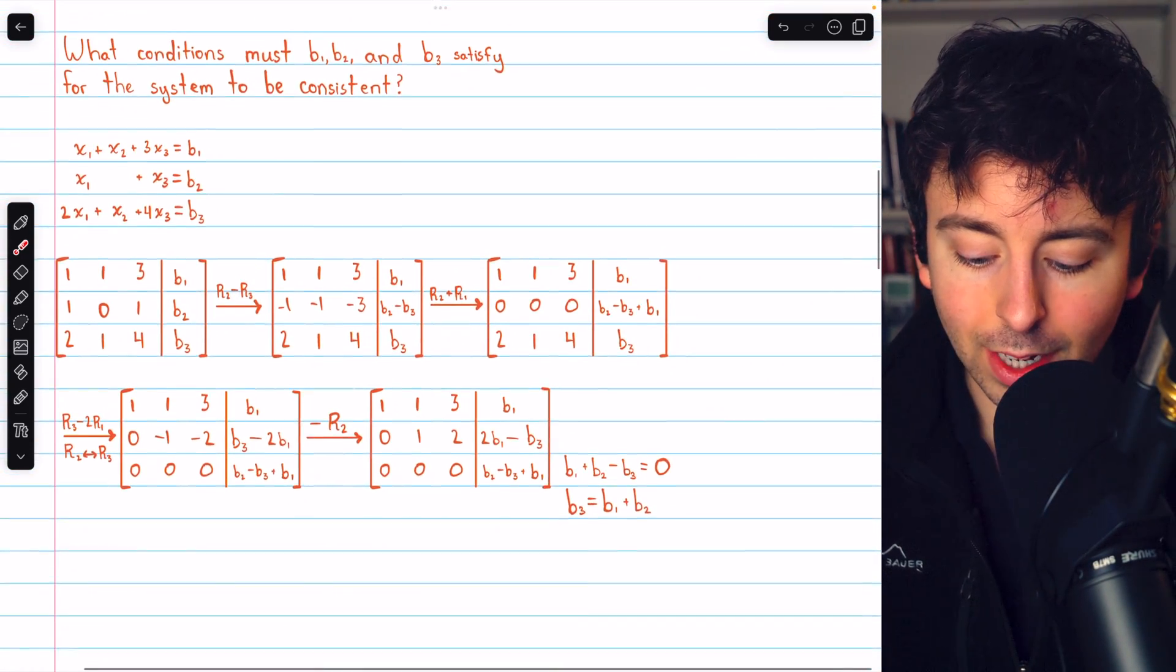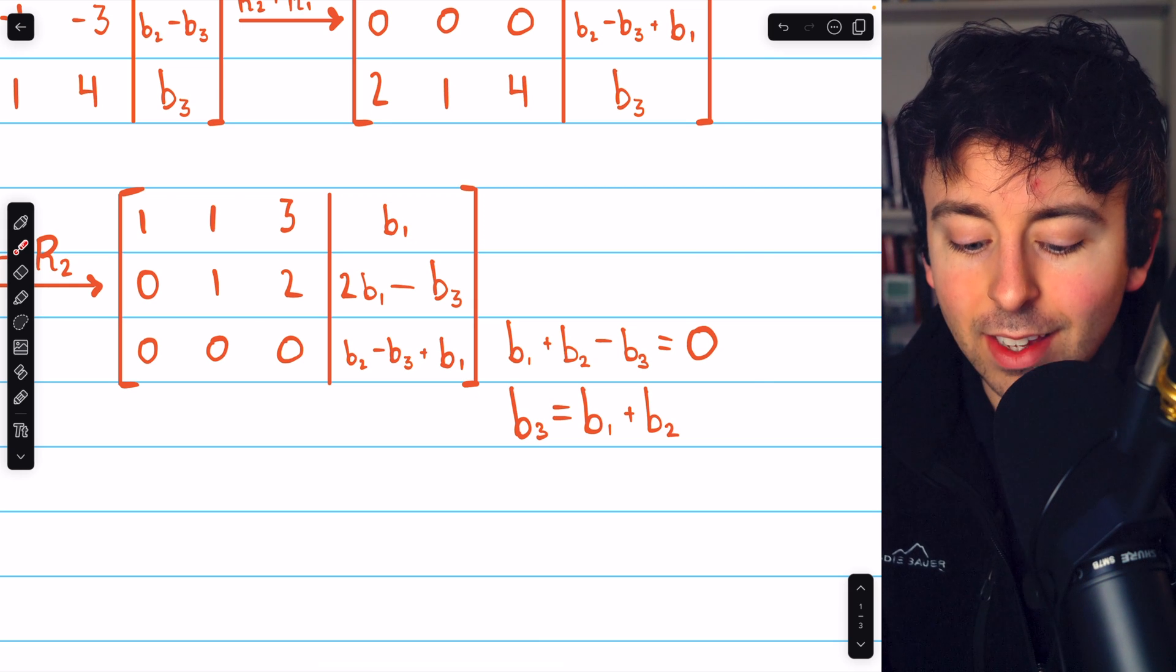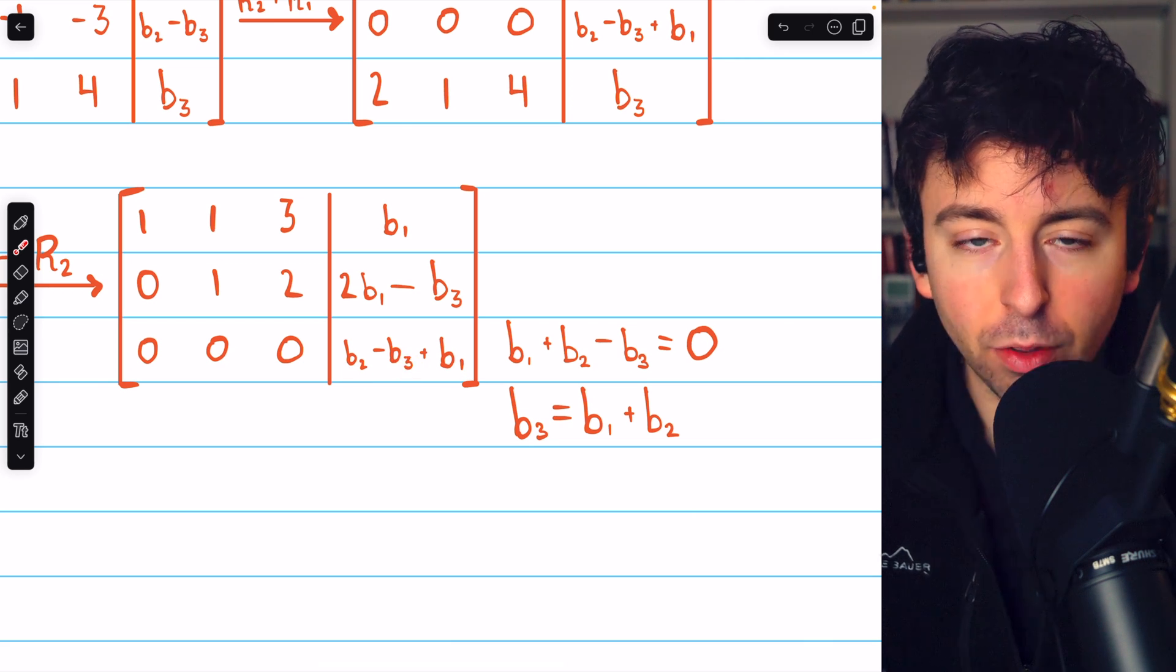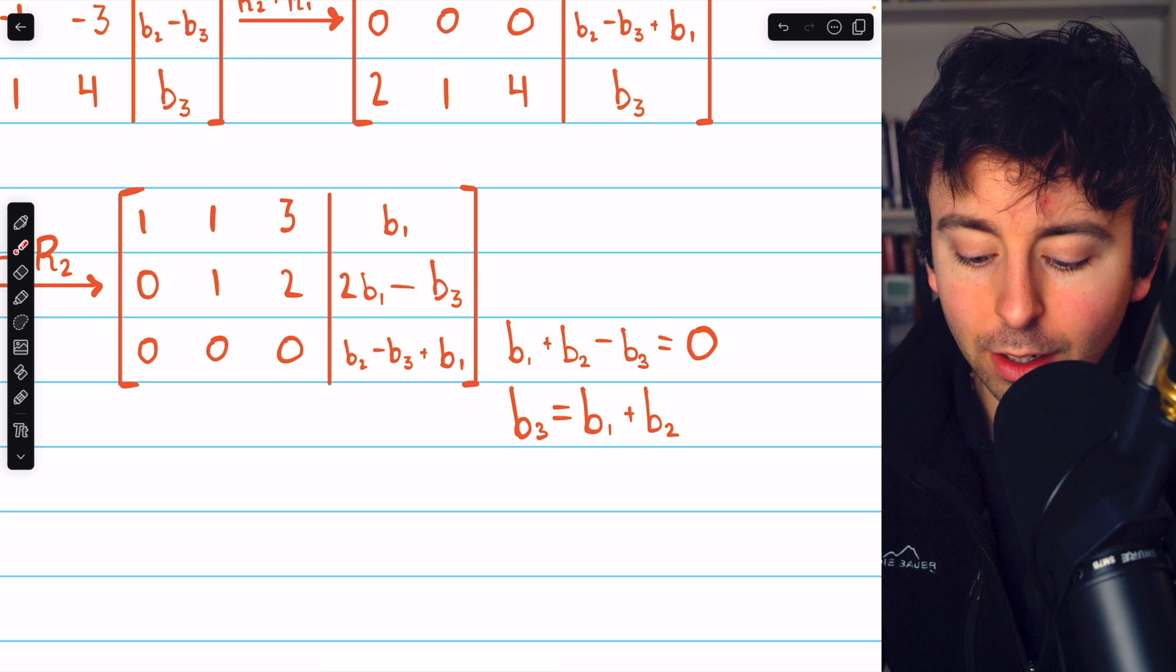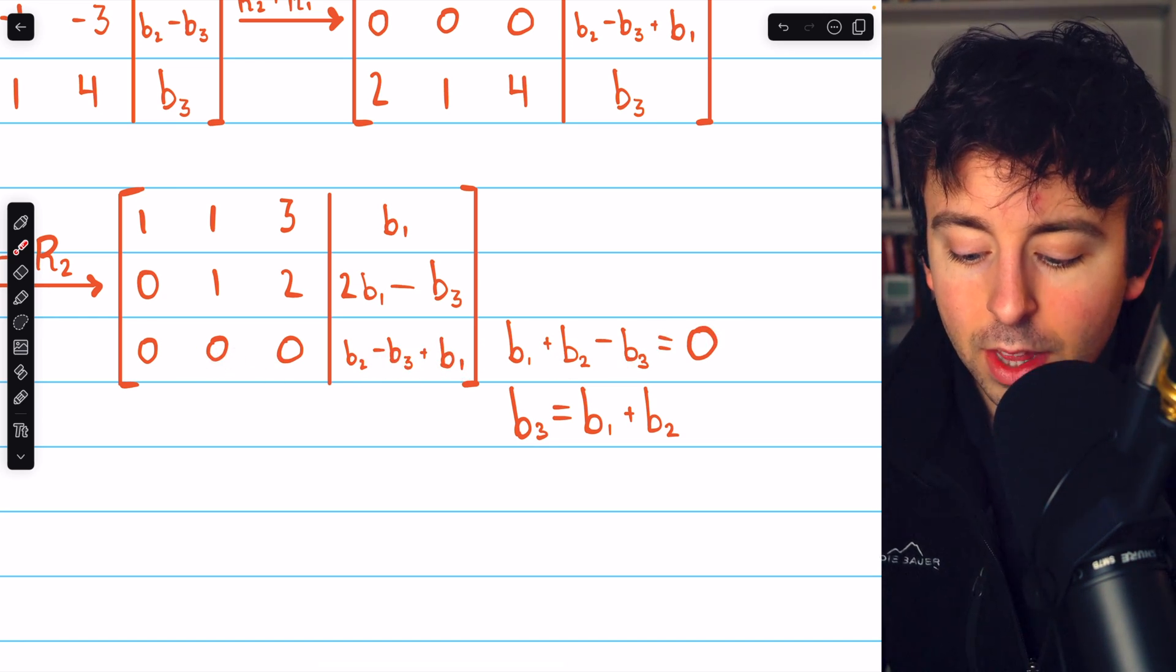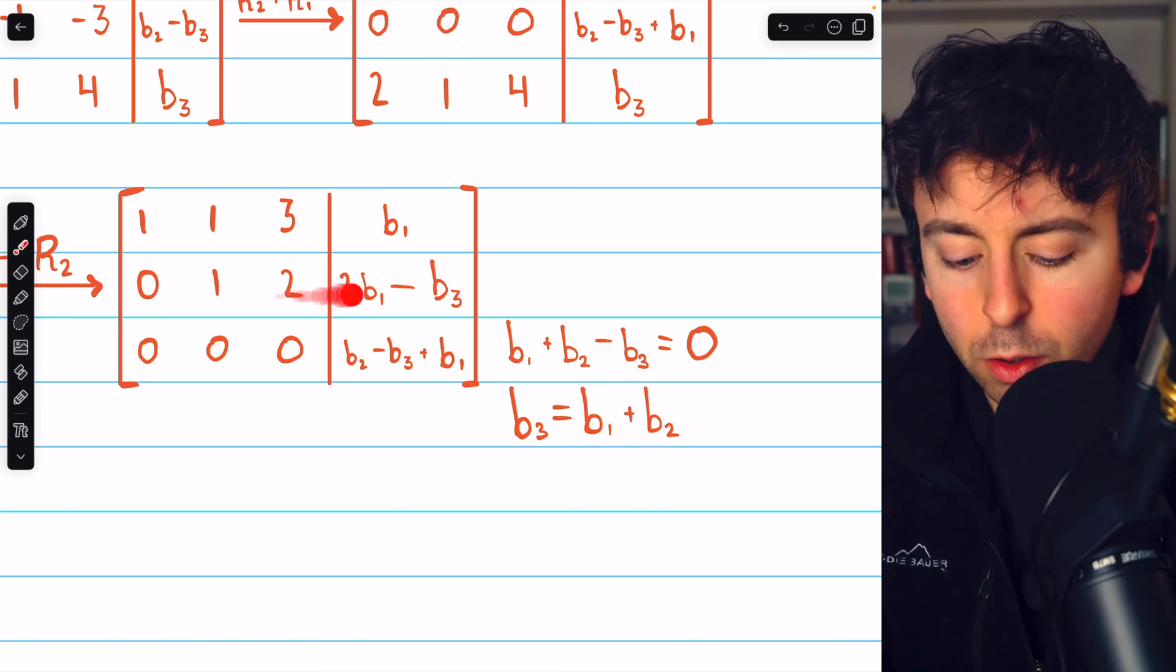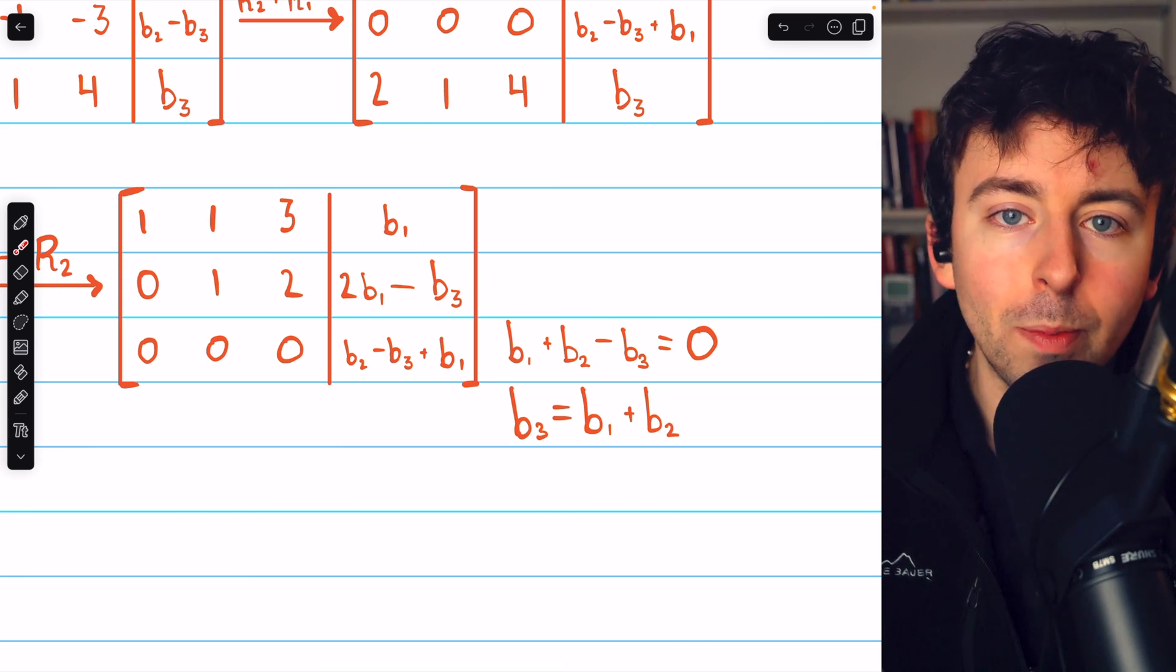So let's take a close look at this row echelon matrix and see what it tells us. This last row is the row that's placing a restriction on b1, b2, and b3. Certainly, from the last row, we see that b1 plus b2 minus b3 equals 0. That's given there. That means that b3 must equal b1 plus b2. The other two rows don't place any restrictions on b1, b2, or b3.